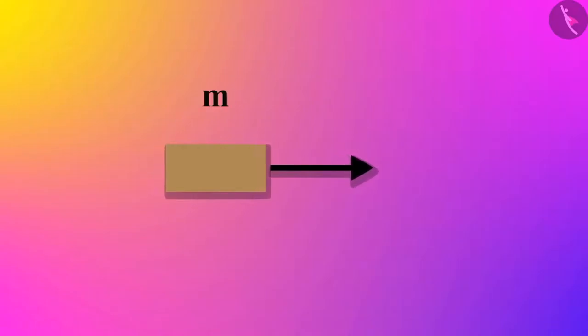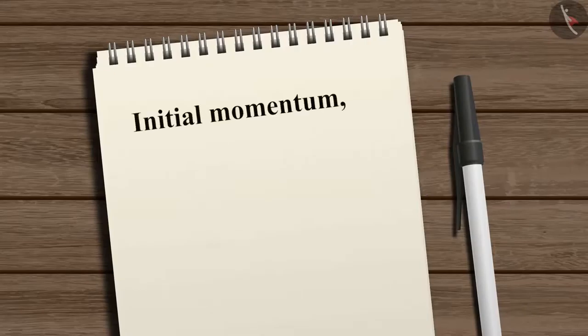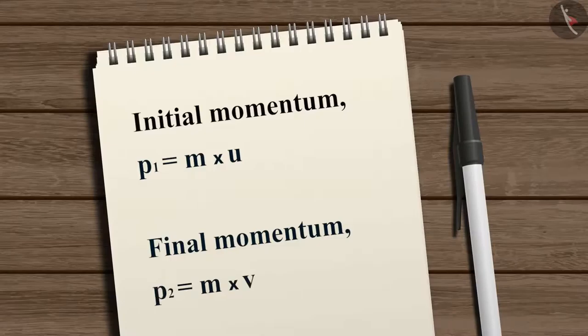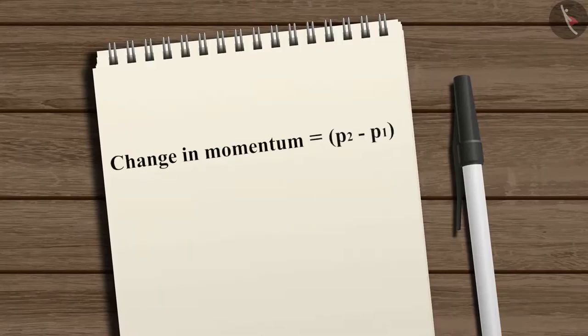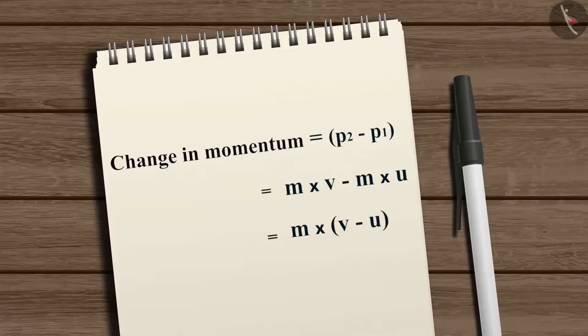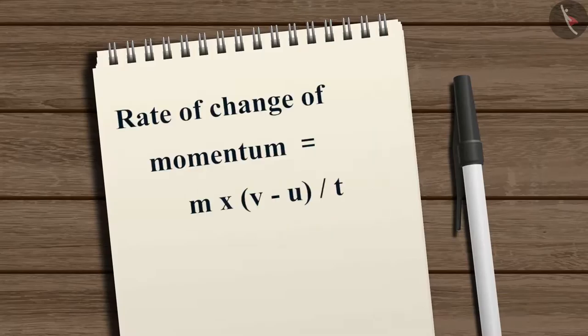Let us consider an object of mass m moving along a straight line with an initial velocity u. After the application of a constant force F throughout the time t, its velocity becomes v. We can represent the initial momentum of the object as p1, which is equal to m multiplied by u, and the final momentum as p2, which is equal to m multiplied by v. Therefore, the change in momentum will be equal to p2 minus p1, which can be written as mv minus mu, or m multiplied by (v minus u).